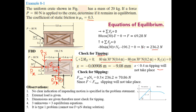The maximum friction force at the interface is 70.86 Newtons. Our calculated friction force from equilibrium equations is 69.28 Newtons — less than the maximum. This means the calculated friction force is below the limiting line for impending motion, so slipping will not take place. The body is truly in the no-motion zone and is in complete equilibrium.